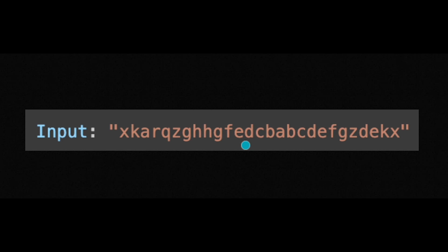The problem is that we don't know where to start, so that's why we need to shift the start point one by one to check the longest palindromic substring. Since a palindromic substring is like a mirror from some character, it's a good idea to consider the current index as the center of the palindromic substring and expand left and right at the same time.